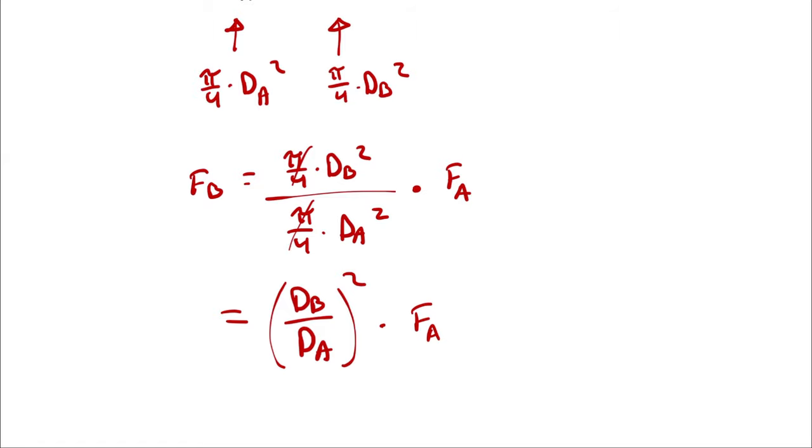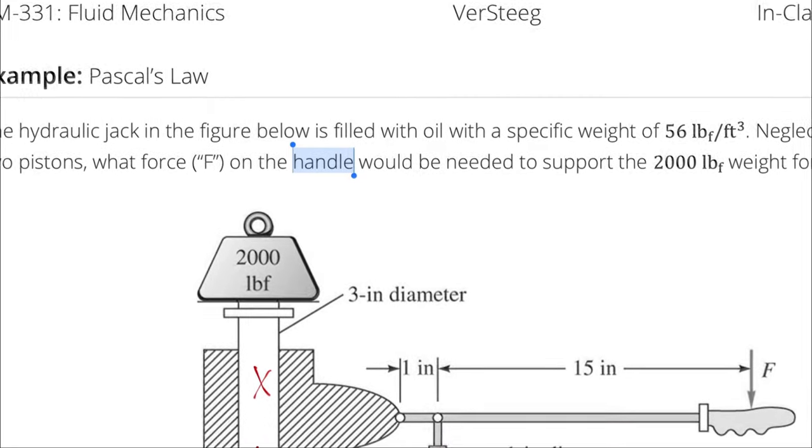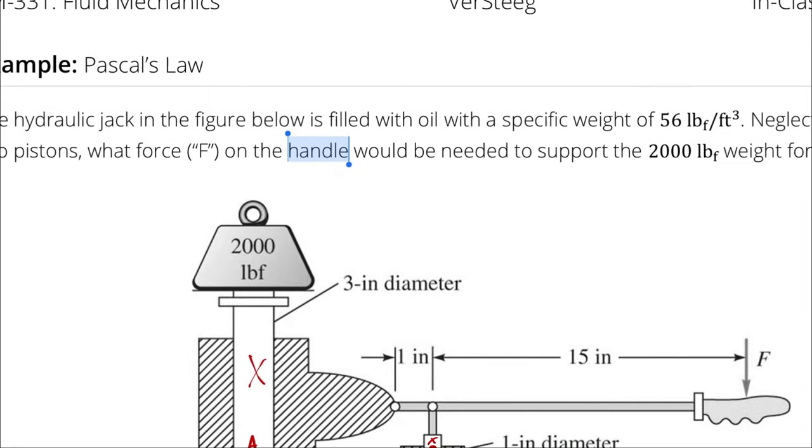I could calculate that numerically if I wanted to, or I could leave it symbolically. B is a 1 inch diameter piston.